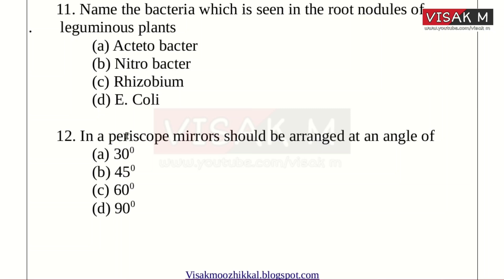Eleventh: In a periscope, mirrors should be arranged at an angle of how many degrees? Option A: 30 degrees. B: 45 degrees. C: 60 degrees. D: 90 degrees. The right answer is Option B, 45 degrees — mirrors are arranged at a 45-degree angle in the periscope.